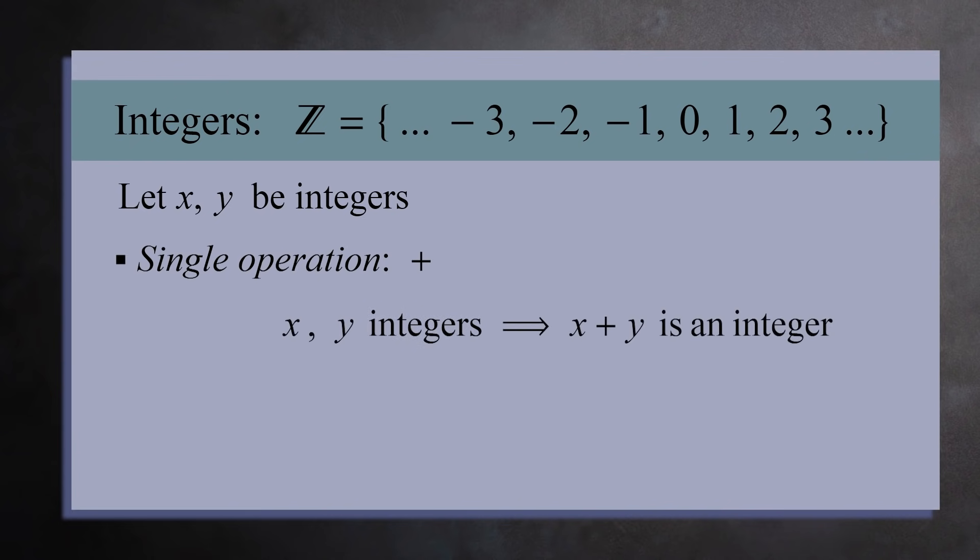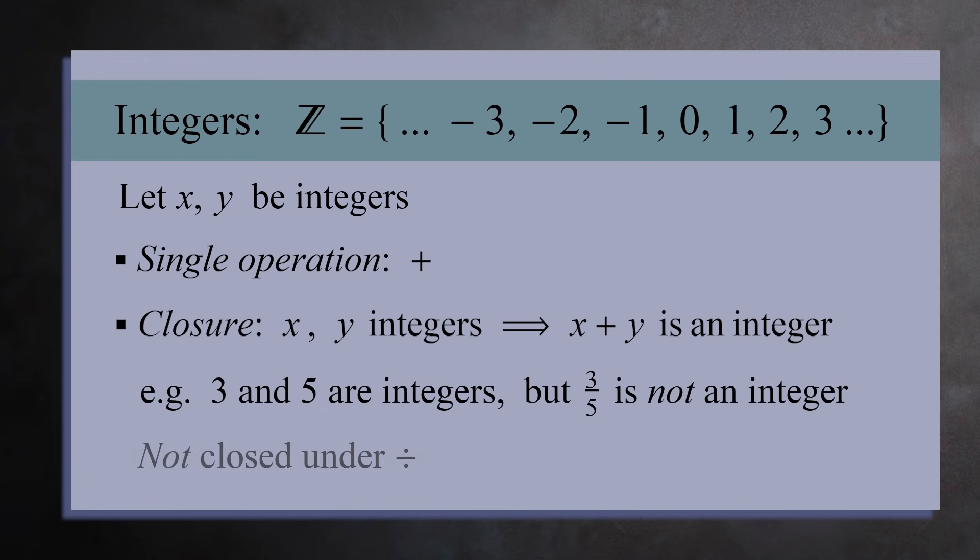If you add any two integers, you get another integer. We say the integers are closed under addition. But if you divide one integer by another, you may not get an integer. For example, 3 divided by 5 is 3 fifths, which is not an integer. So we say the integers are not closed under division, because when you divide two integers, you may get a number outside the set of integers.